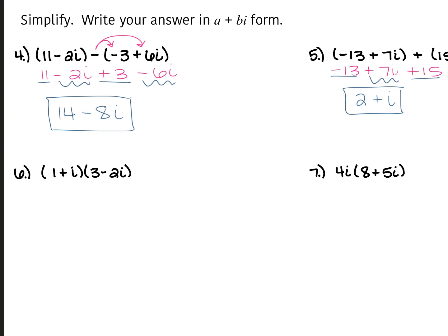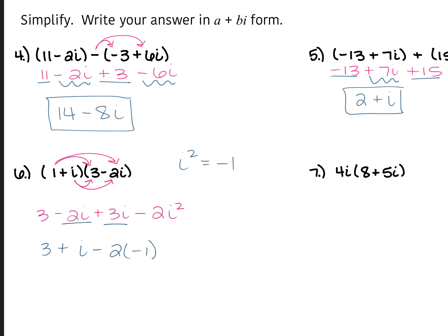For number 6, we have 1 plus i times 3 minus 2i. We're going to FOIL it out. 1 times 3 is 3. 1 times negative 2i is negative 2i. i times 3 is 3i. And i times negative 2i is negative 2i squared. Since i squared is equal to negative 1, that i squared turns into negative 1. Combining like terms: 3 plus i minus 2 times negative 1 — the negative 2 times negative 1 is positive 2, so that's 3 plus i plus 2. Combine the 3 and the 2 to give you 5 plus i.